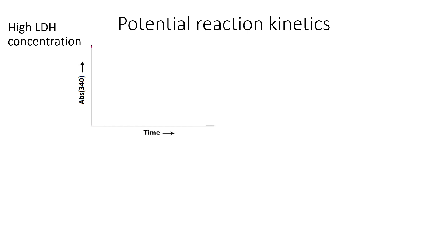What are some results you might see? If you have a high concentration of LDH, you'll probably see a curve that starts out fairly high with a really steep slope and then levels out over time. If you have any kind of steep curve that transitions into a more gently sloping curve, that's a good readout that can give you an accurate reading for your LDH — you just want to measure that initial velocity as best you can.